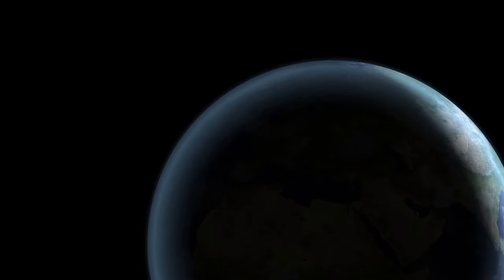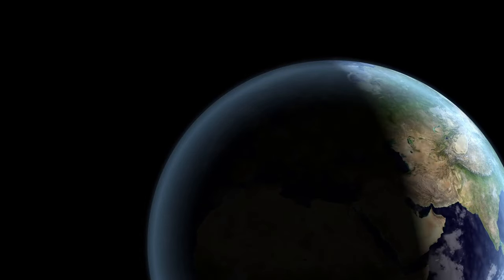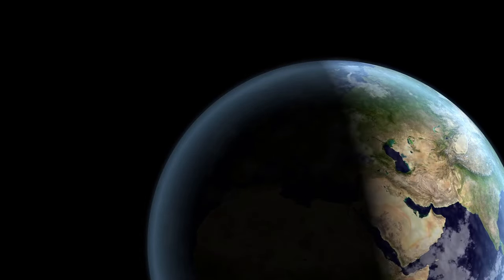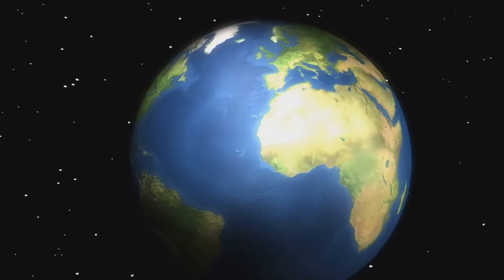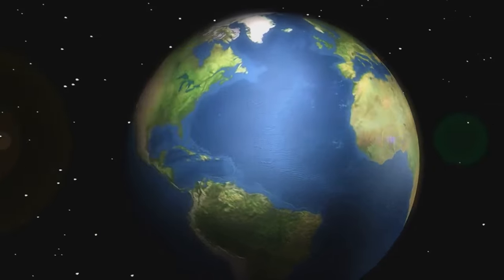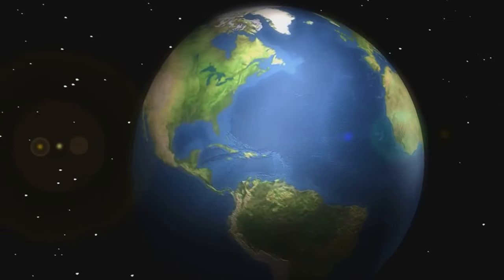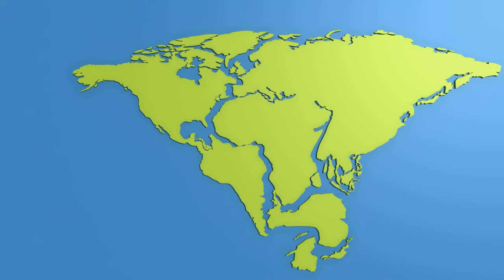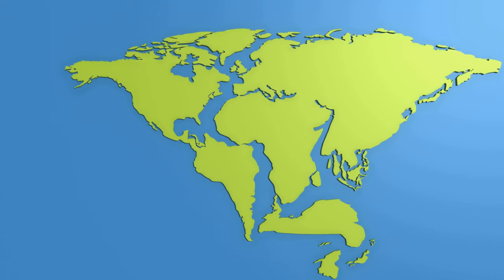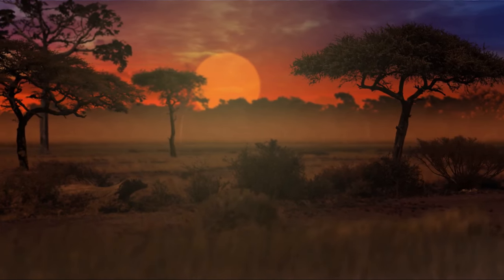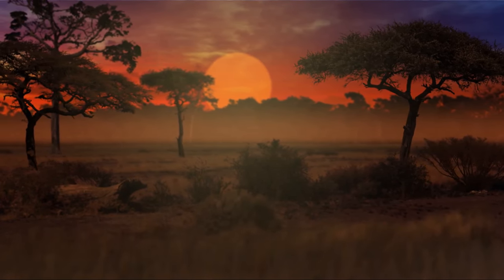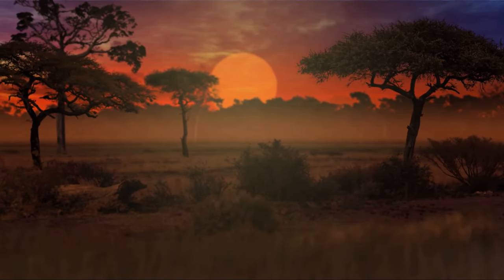The African Plate, as we know it, was nestled in the heart of Pangaea, surrounded by what would later become North America, South America, Europe, and Asia. Now let's talk about tectonic shifts — movements of the Earth's crust driven by the heat in the Earth's core. Over millions of years, these shifts caused Pangaea to break apart. This continental drift led to the formation of separate landmasses and the birth of the African Plate.